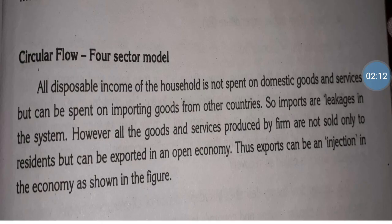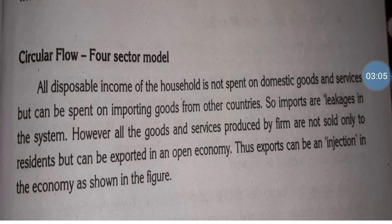In the two-sector model without saving, whatever household earned from firm was entirely spent. In the two-sector economy with saving, some amount of money earned by household was saved in the bank, and whatever money firm earned after selling goods and services, some amount was invested, creating a financial market. In the three-sector economy, government charged taxes from people and spent money on people in the form of expenditure — money was injected as expenditure and leaked in the form of taxation.